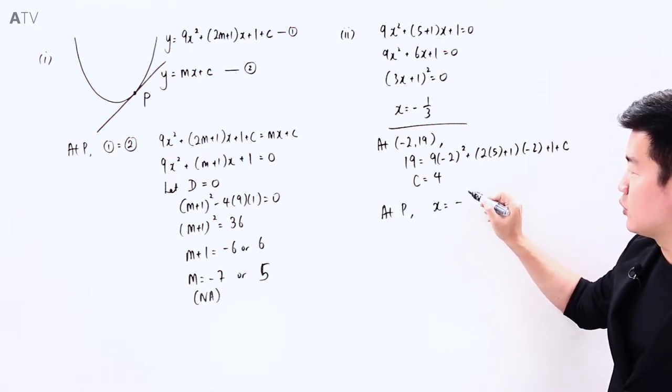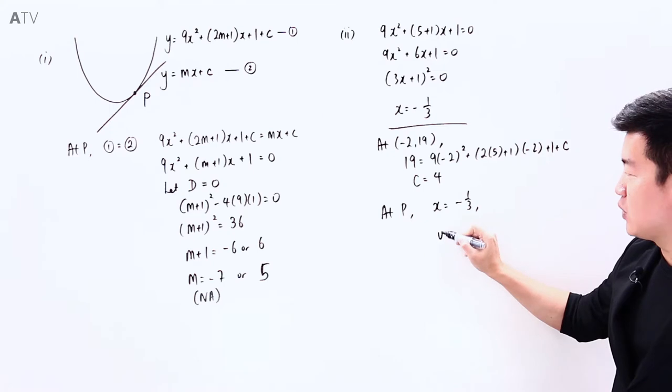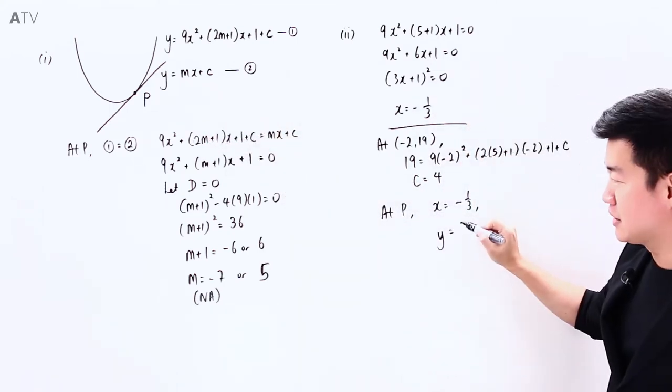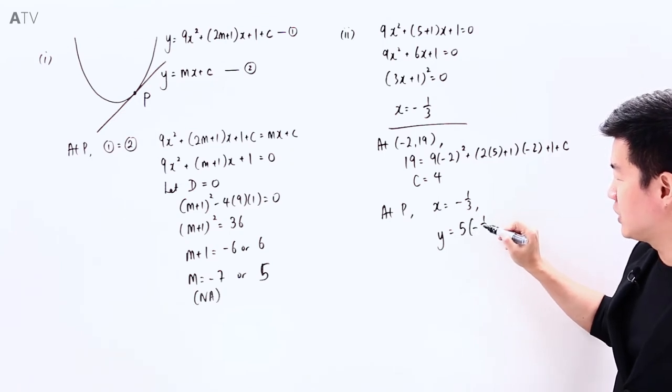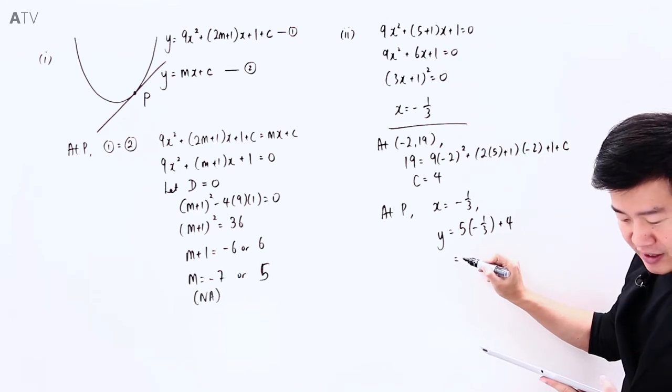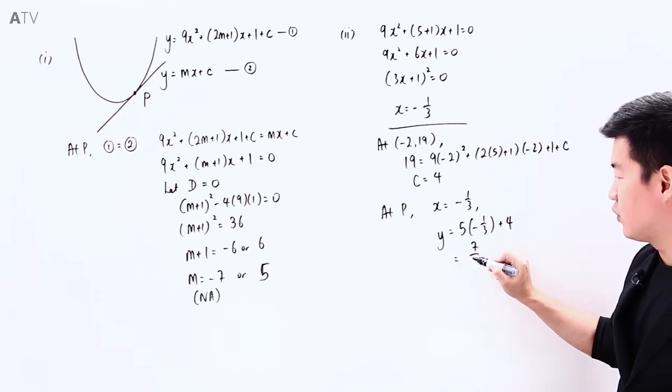we know that x equals -1/3. And we know that y equals mx plus C, which is 5 times (-1/3) plus C, which is 4. So y equals 7/3.